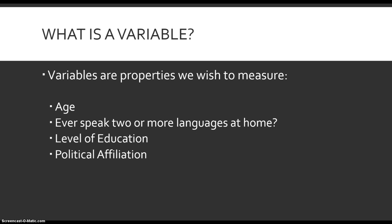Take, for instance, the question: do you ever speak two or more languages at home? It has exactly two values, which makes it a variable. As a hypothetical, take the question: are you a human being? If you're administering this to individuals, this wouldn't count as a variable, because there's only one possible answer.